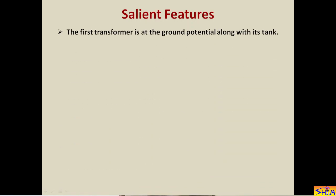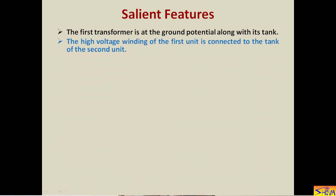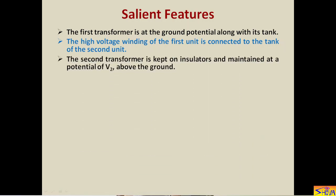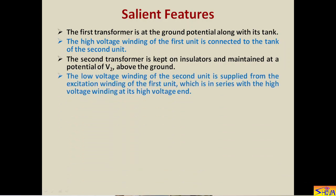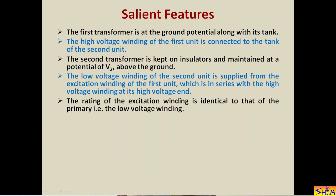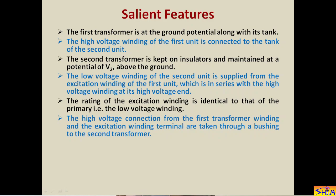The first transformer is at ground potential along with its tank (body). The high voltage winding of the first unit is connected to the tank of the second unit. The second transformer is kept on insulators and maintained at a potential of V2 above ground. The low voltage winding of the second unit is supplied from the excitation winding of the first unit, which is in series with the high voltage winding at its high voltage end. The rating of the excitation winding is identical to that of the primary low voltage winding. The high voltage connection and the excitation winding terminal are taken through a bushing to the second transformer.